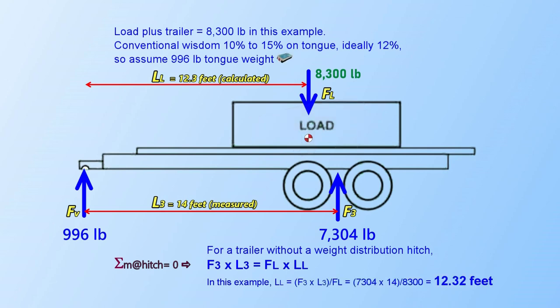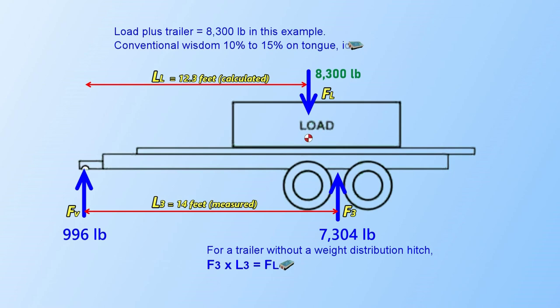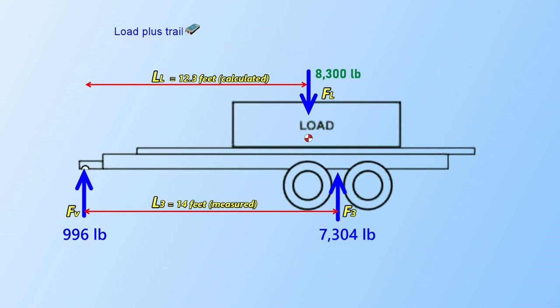A moment, also known as torque, can be visualized as a rotational force. For example, a torque wrench provides the specified moment at a bolt and is equal to the force applied times the distance from the bolt to the force location.